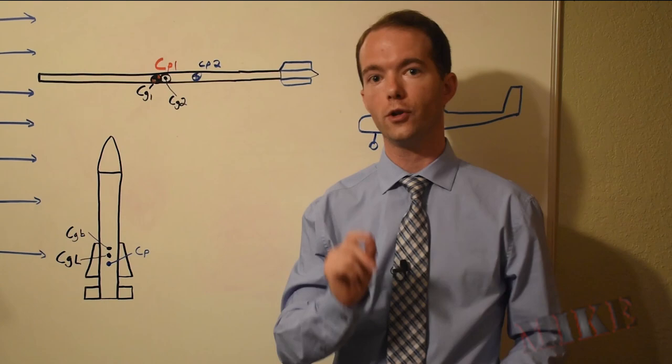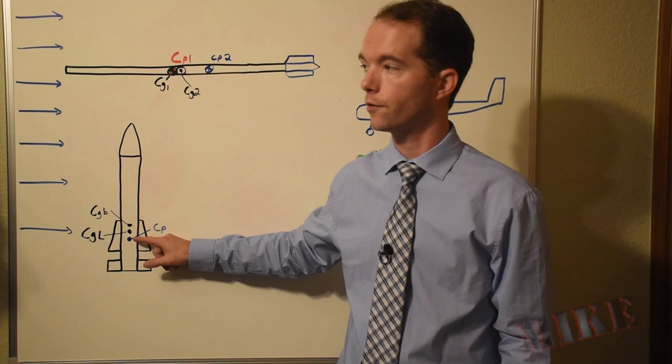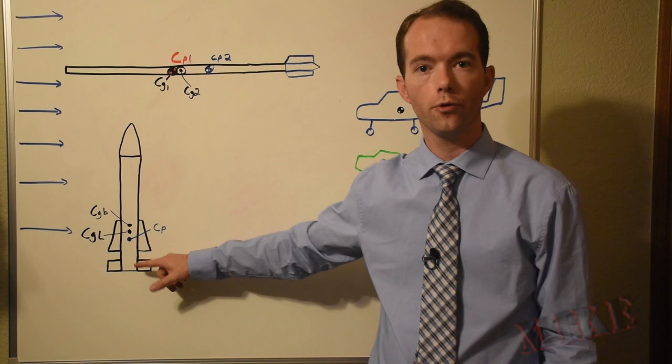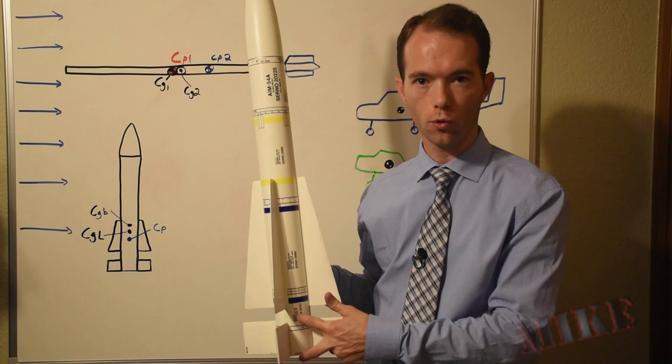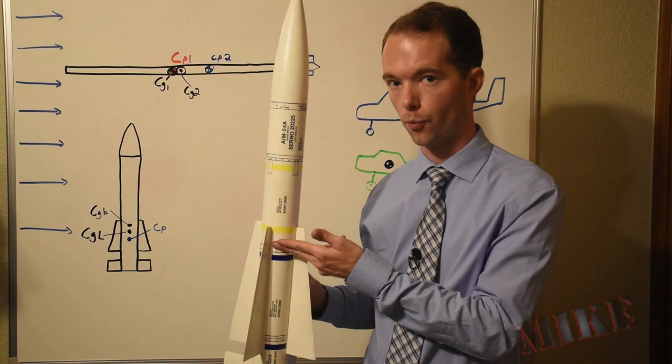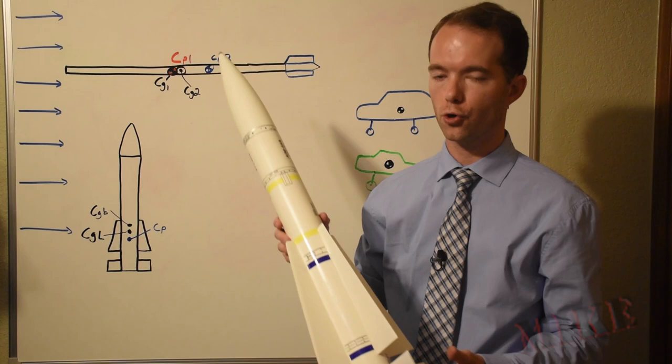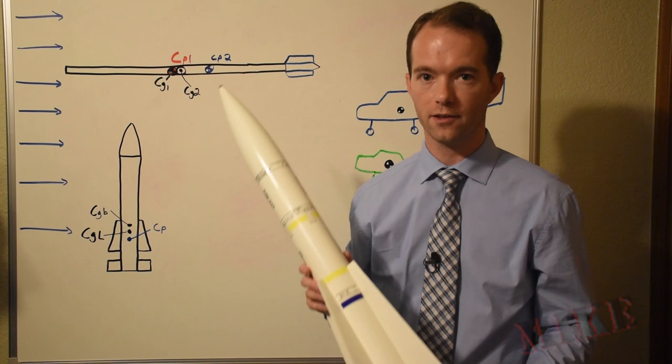So at launch, your CG should be ahead of your CP. Or else, as soon as it comes off the launch rod, it's going to tumble like crazy. As your motor burns out, at burnout, your CG is going to move because now you don't have this massive weight of fuel. Massive is a relative term. You don't have this giant chunk of fuel in the back of your rocket anymore. And so it's lighter in the back, and so your CG is going to move forward.